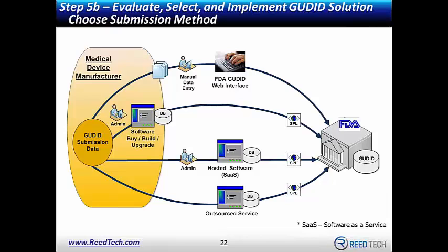On low volume for manual entry: we've seen answers around 100. Less than 100, you can make those entries manually. As you get over 100, an automated system becomes much more practical. We do have clients with fewer than 10 records who are still interested in using a third party for the expertise and support they provide along the way.